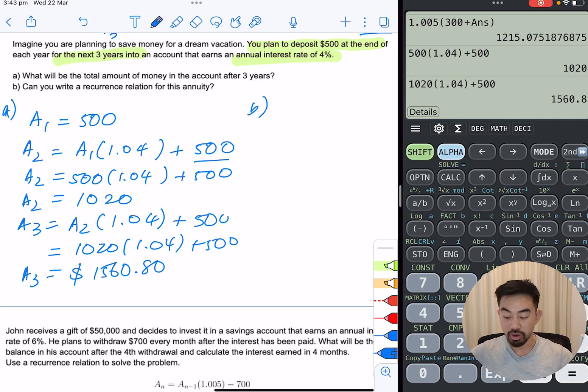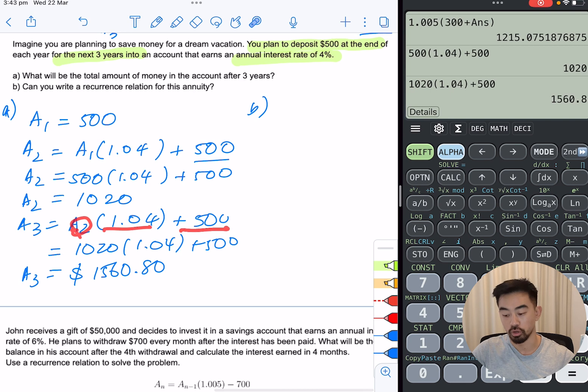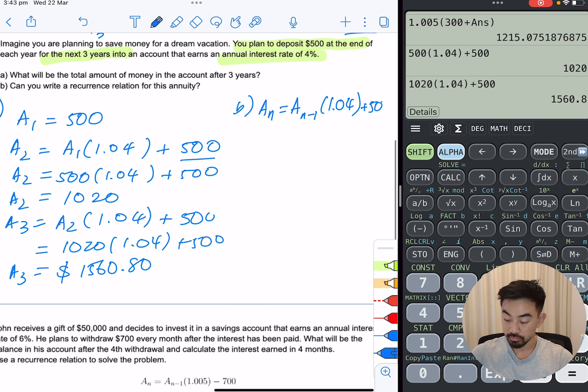Now part B. So can you write a recurrence relation for this annuity? Well, it's kind of baked in here if you look at it. So let's just choose this. So you've got the year you're looking for, the year before, your interest plus your contribution or your deposit. So to generalize, it's going to be An is equal to An-1 times 1.04 plus 500. That is basically done.